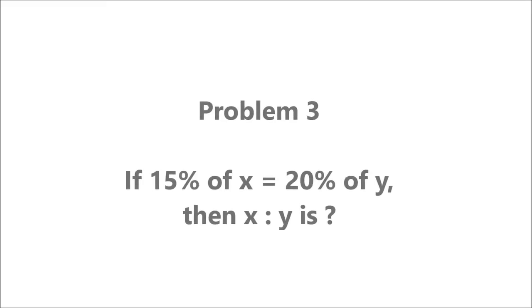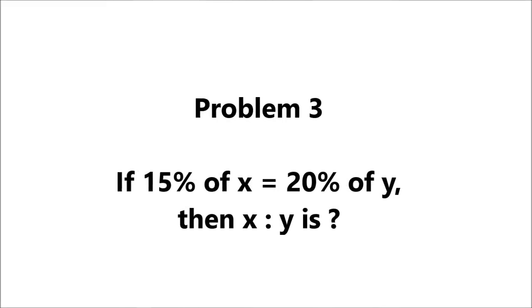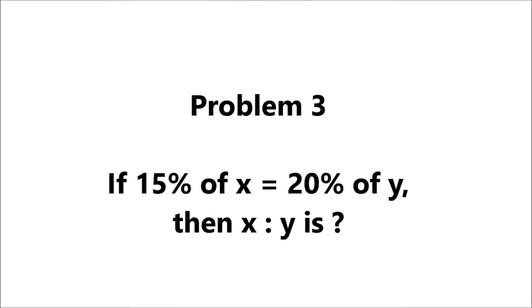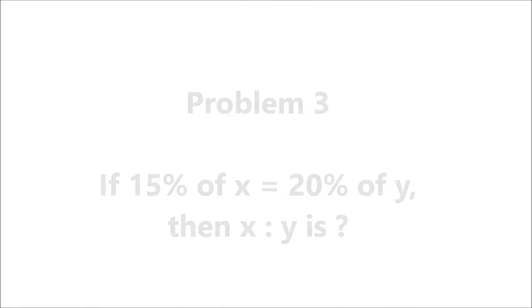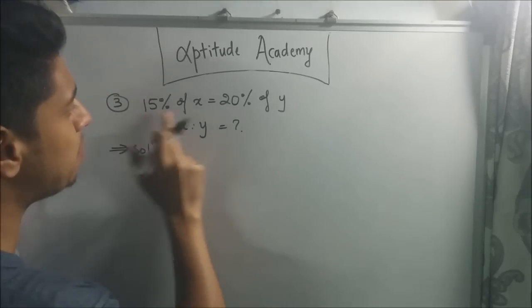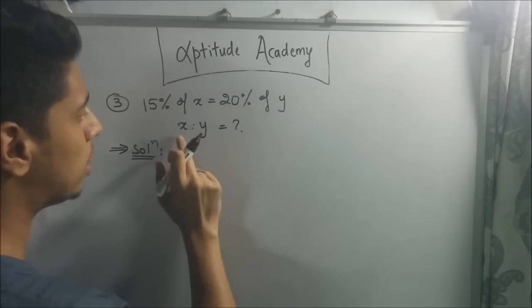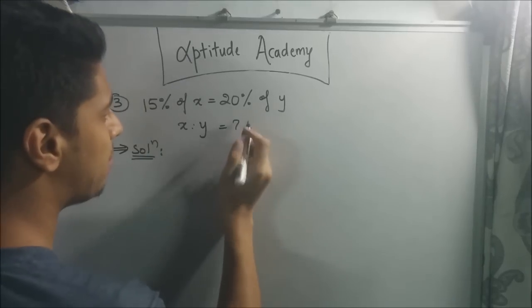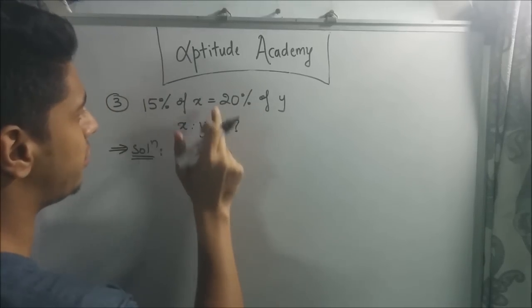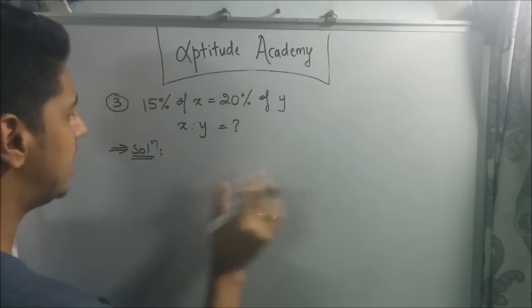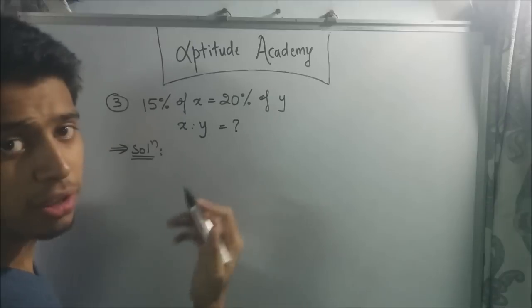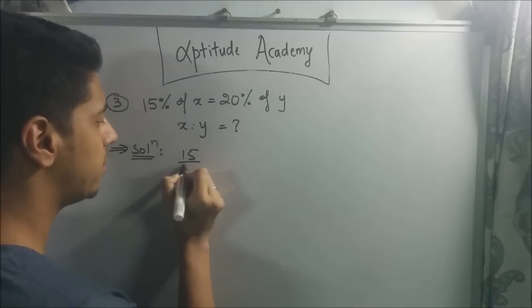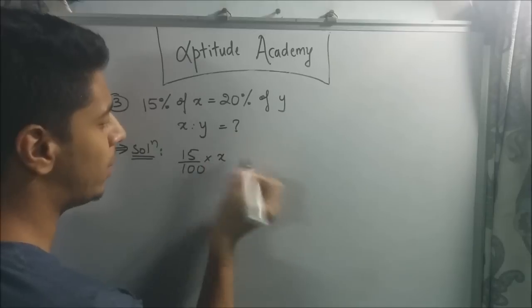Let's go into problem number 3. Problem 3: If 15% of x equals 20% of y, then x:y is? Now problem 3 says that 15% of x equals 20% of y. So what is x:y? Let's not waste time in finding out what is x and what is 15% of x and what is y and what is 20% of y. Let's just do it the fast method. 15% is 15 over 100 of x, which means times x. Similarly, 20% is 20 over 100 times y.